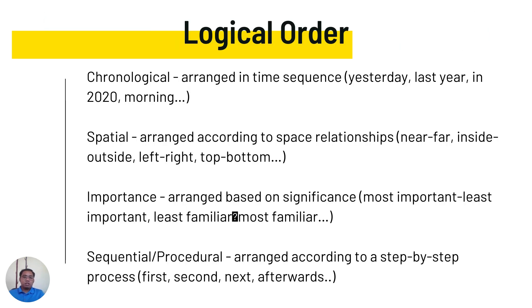Let's proceed to logical order. There are cases where we use chronological order — arranged in time sequence, such as yesterday, last year, in 2020, morning, afternoon, evening. In spatial order, details are arranged according to space relationship: near, far, inside, outside, left, right, top, bottom. According to importance, details are arranged based on significance: most important, less important, less familiar, or most familiar. In sequential or procedural order, details are arranged according to a step-by-step process: first, second, next, afterwards.